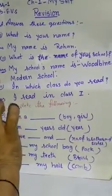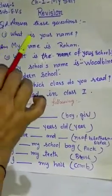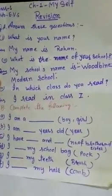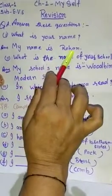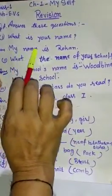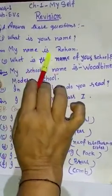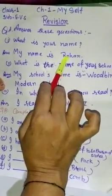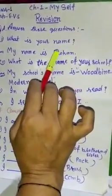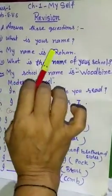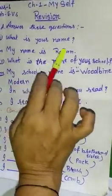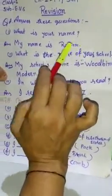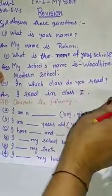Question number A: What is your name? आपका नाम क्या है? Answer: My name is Rohan. बच्चों, यहाँ पर My name is Rohan है, लेकिन आपका जो भी नाम है वही आपको लिखना है. जैसे आपका नाम आसिफ है या रोहित है या जो भी है वही आपको यहाँ पर लिखना है. जिसका रोहन रहेगा वो रोहन लिखेगा.